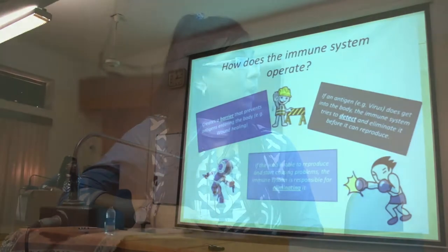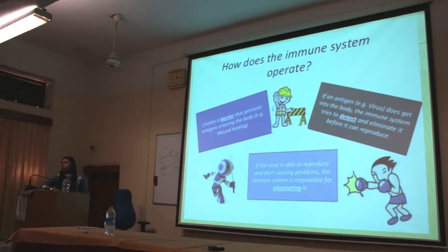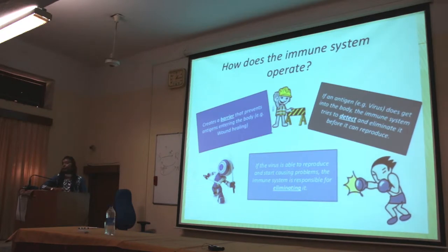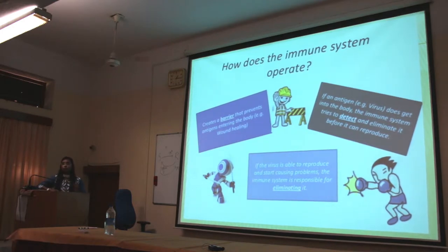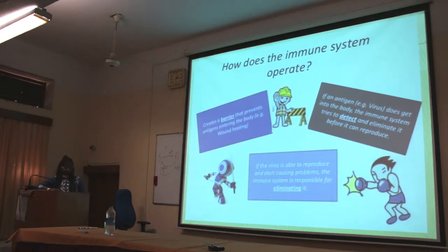If the antigen is not detected or eliminated at the secondary level, then the third level of the immune system comes into action. If, for example, a virus enters your body and reproduces, the immune system is going to detect and eliminate it at the third level.